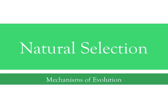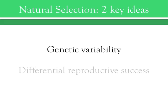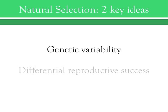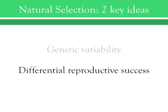Natural selection is an important mechanism that drives populations to change over time, promoting the increasing prevalence of favorable genetic traits and the decreasing prevalence of unfavorable ones. This important driver of evolution is underpinned by two important requirements: genetic variability and differential reproductive success. Genetic variability is required to provide multiple traits to select from, and differential reproductive success is required to ensure that selection occurs at all.